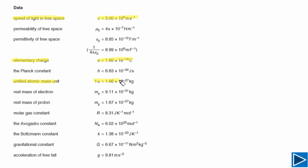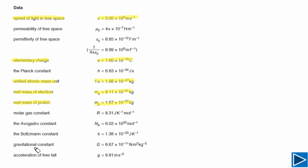You will also sometimes need the atomic mass unit: 1u = 1.66 × 10⁻²⁷ kg. The rest mass of an electron — that is, the mass of an electron — is 9.11 × 10⁻³¹ kg. This is also important for some calculations at AS level. The rest mass of a proton is simply the mass of the proton, as we are not talking about relativity at AS level.